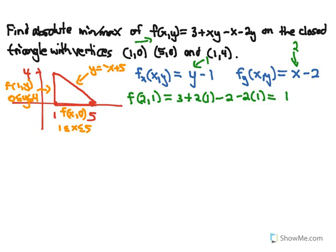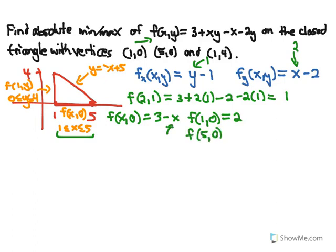Starting with the bottom boundary, f(x, 0): plugging 0 in for y gives us 3 minus x. This is maximized when x is as small as possible, so at the point (1, 0): 3 minus 1 equals 2. It's minimized when x is as large as possible, so at (5, 0): 3 minus 5 equals negative 2. So along the bottom boundary, f(1, 0) = 2 and f(5, 0) = −2.